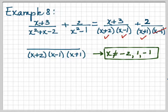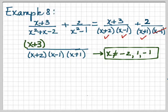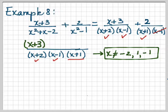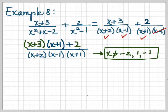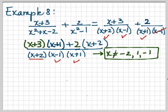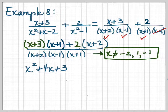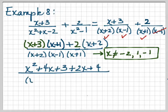We can go ahead now and state our restrictions: x cannot be −2, 1, or −1. For the first numerator (x + 3), we already have (x + 2) and (x − 1) in the denominator — we are missing (x + 1), so we multiply (x + 3) by (x + 1). For the second numerator 2, we already have (x − 1)(x + 1) — we are missing (x + 2), so we multiply that numerator by (x + 2).